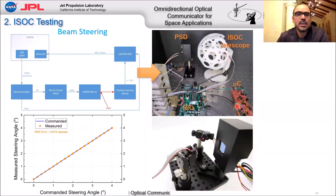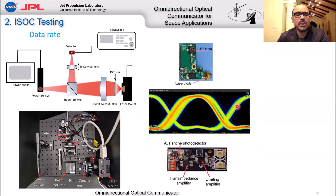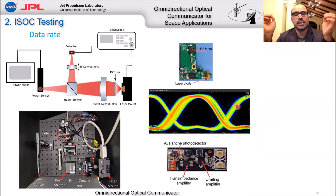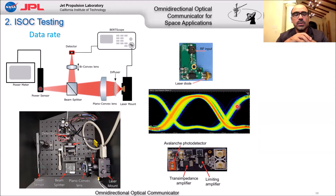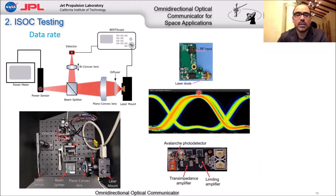Here are a couple of ISACs under testing in our lab, along with more steering testing results. For data rate testing, we had a transmitter and receiver communicating with each other, changing distances and adjusting speed to measure the bit error rate (BER) for each condition. This testing achieved a BER of 10^-8. The eye diagram shown confirms very good signal quality.